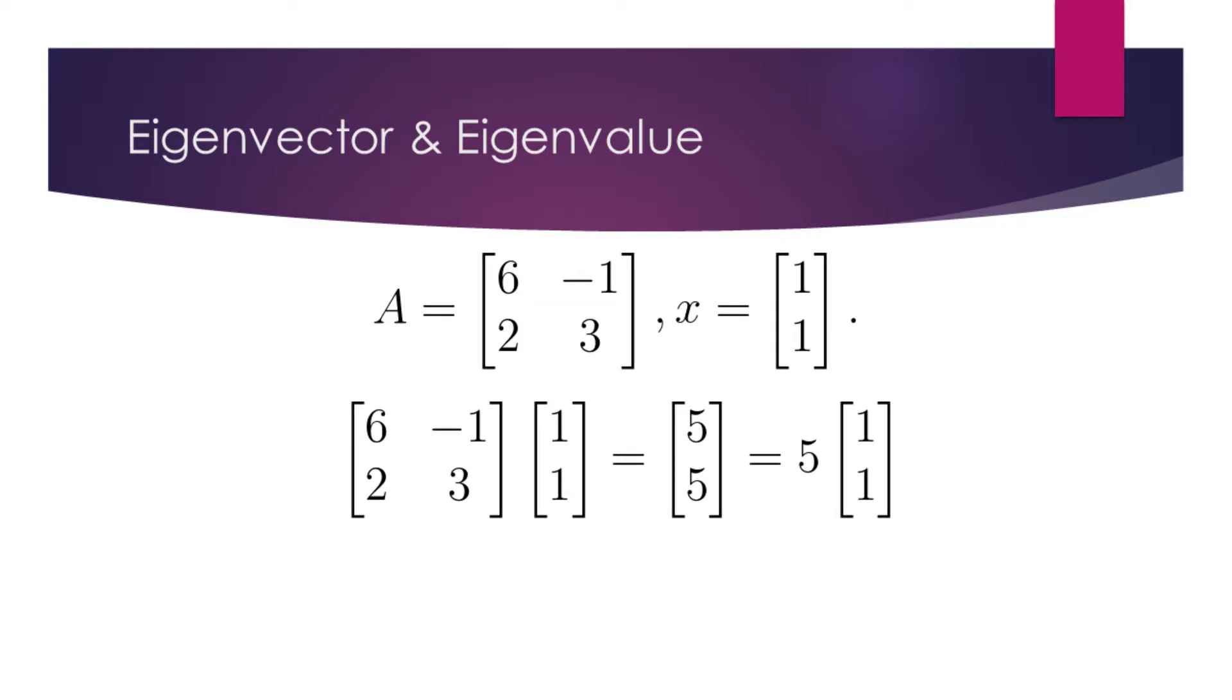Consider the matrix A and the vector x. If we multiply them, we will see that this scales the vector x by 5. This means that x is the eigenvector of the matrix A, and the corresponding eigenvalue of the vector x is 5.